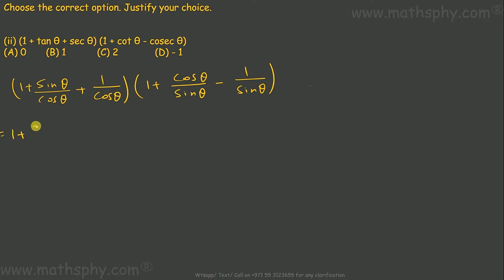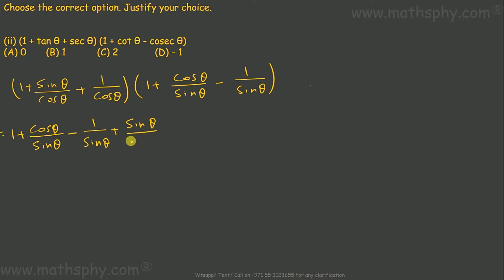Now let's multiply. 1 multiplied with all terms in the second bracket gives me 1 plus cosθ over sinθ minus 1 over sinθ. Then sinθ over cosθ multiplied into 1 gives sinθ over cosθ, plus sinθ over cosθ into cosθ over sinθ gives 1 (sin and cos both cancel), minus sinθ over cosθ into 1 over sinθ gives 1 over cosθ (sin cancels). I am left with 1 over cosθ.